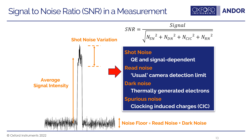Signal-to-noise is defined as your signal divided by your noise, where the overall noise is comprised of different sources added in quadrature. The main sources are: shot noise, based on quantum efficiency and dependent on your signal; read noise, the camera detection limit from reading out charge; dark noise, from thermally generated electrons in the detector, addressed by cooling; and spurious noise from clocking-induced charges. The noise floor at the bottom of a trace is defined as the read noise plus the dark noise.